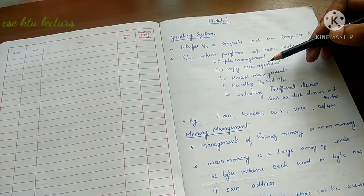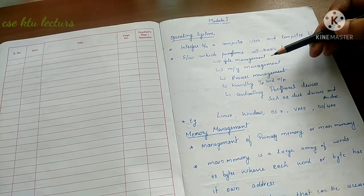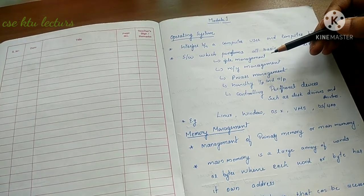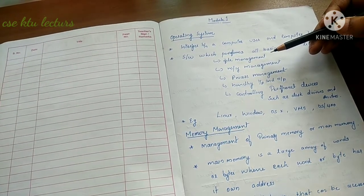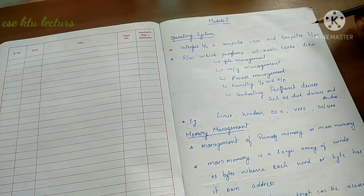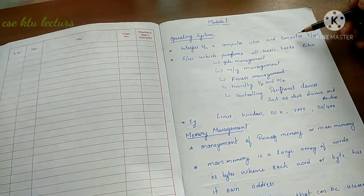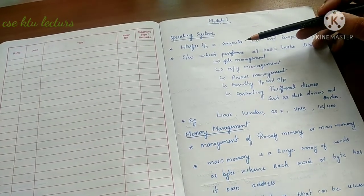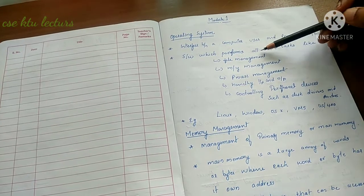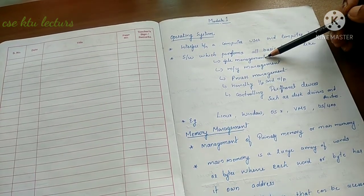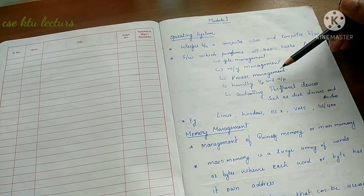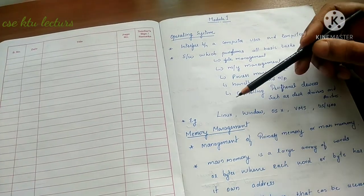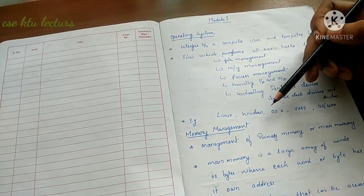The operating system is an interface between the user and computer hardware. The main functions of the operating system are file management, memory management, process management, handling input/output, and controlling peripheral devices. Examples of operating systems include Linux and Windows.